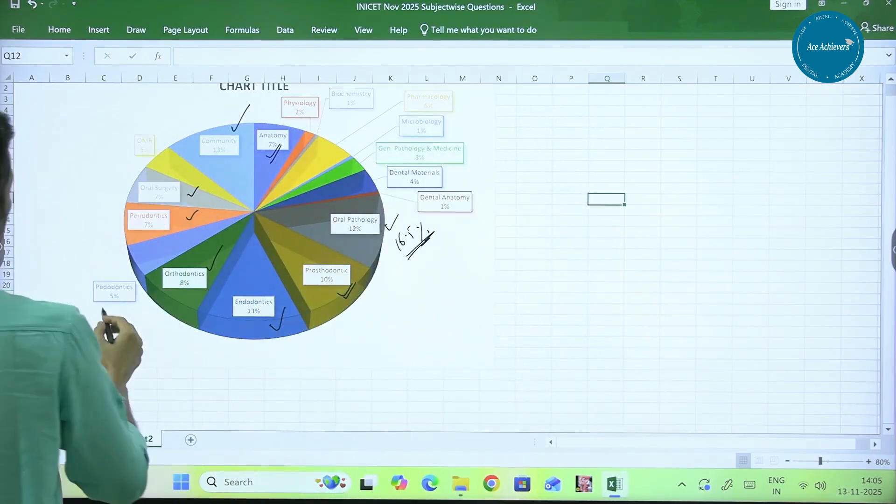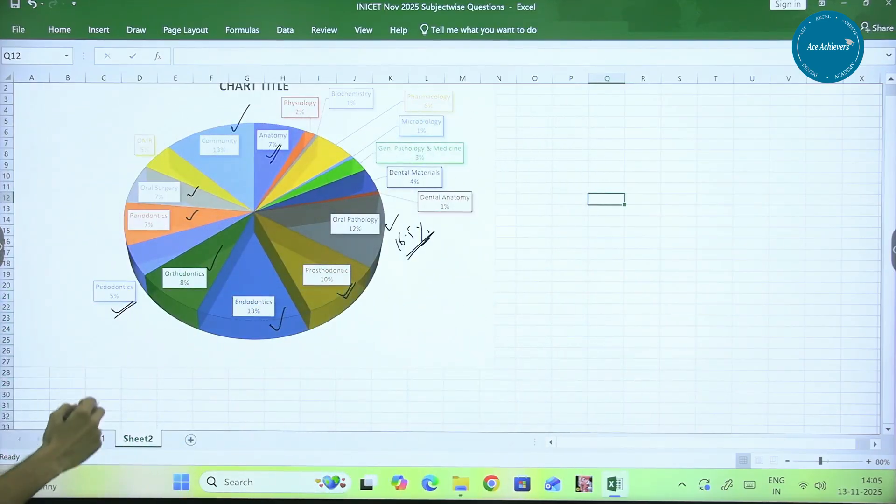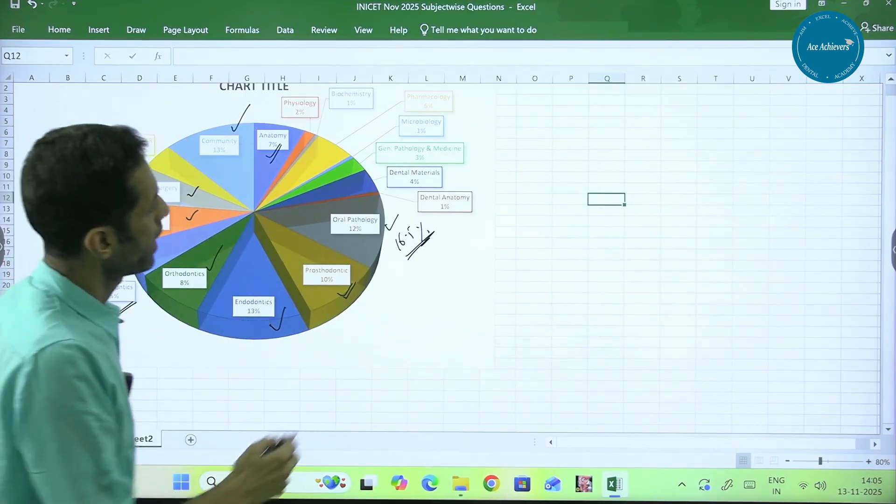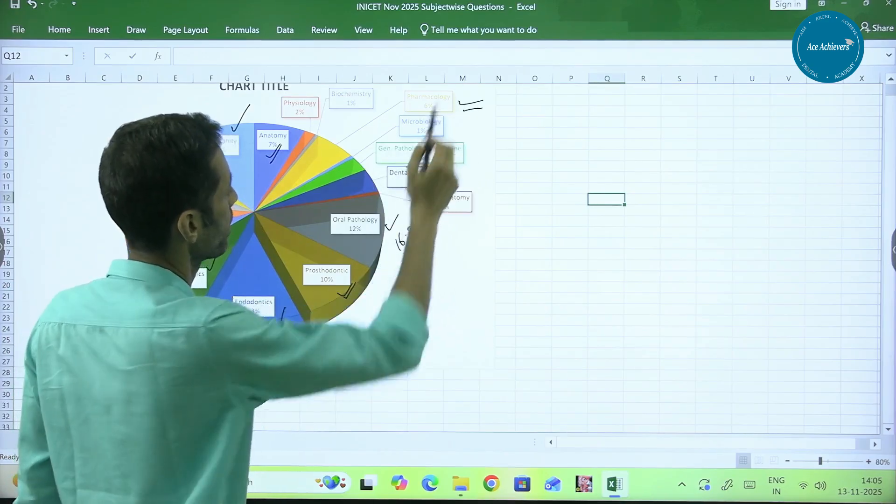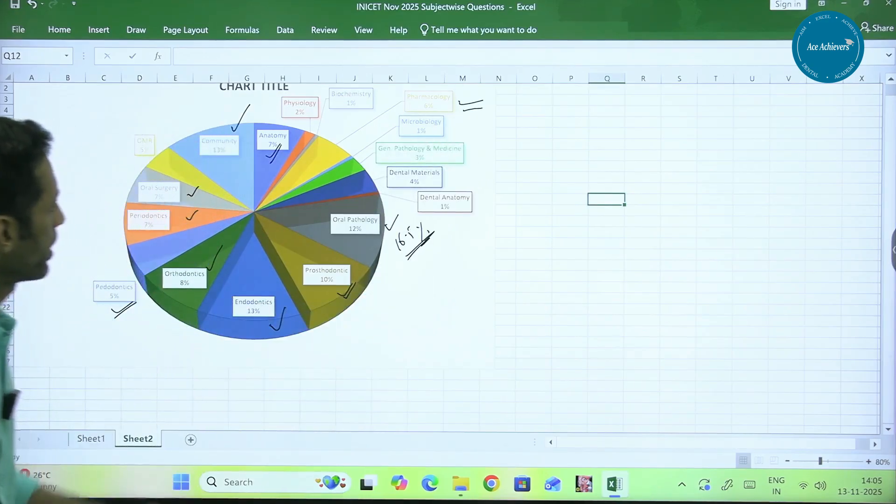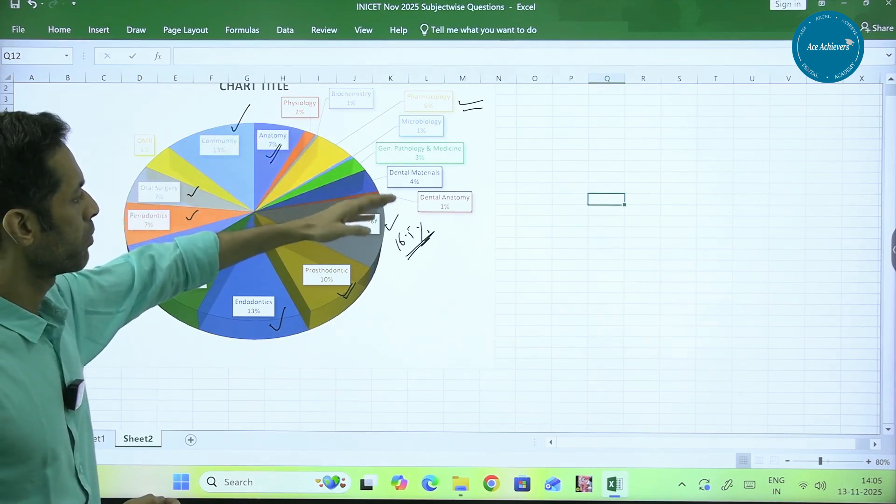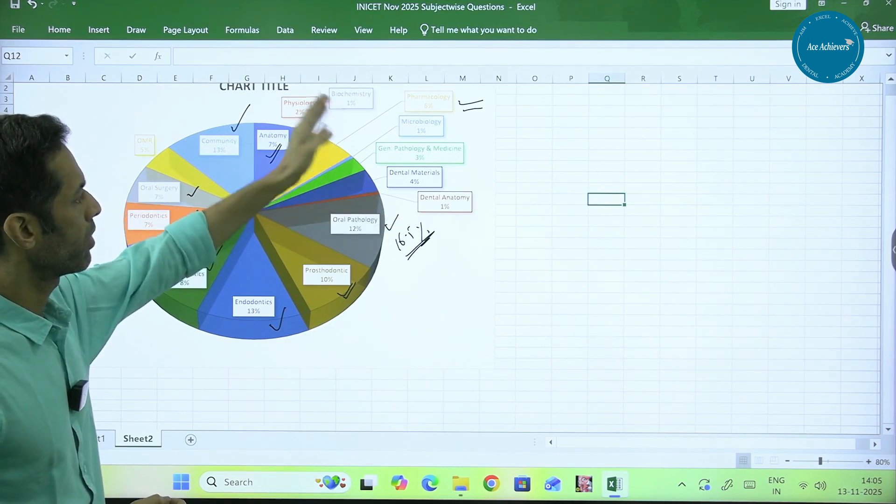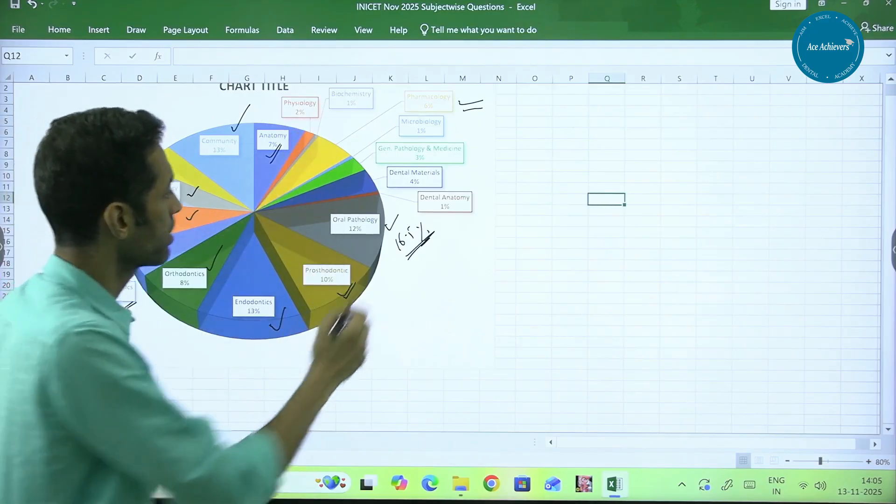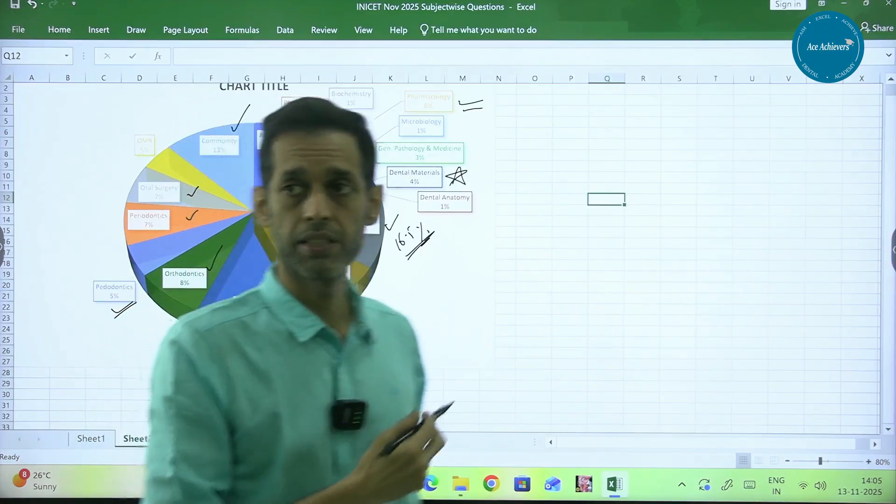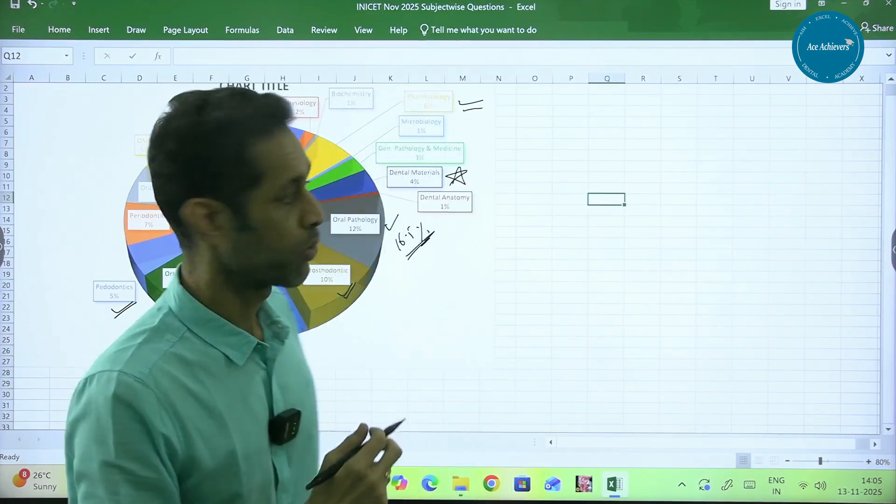At the fourth level, you have pedo. Just 5% weightage. OMR, I have already clubbed with oral pathology. And then pedo and pharmac have nearly the same weightage. And rest of the subjects like physio, biochem, micro, dental materials, dental anatomy, they are having very low weightage. This is a surprise for me. Don't think dental materials is going to come every time at this percentage. This is a surprise for me.